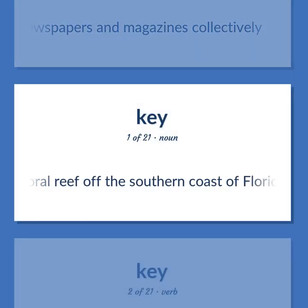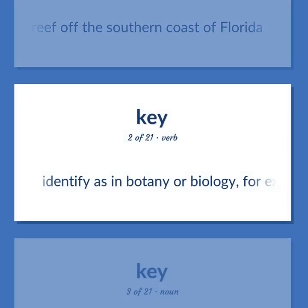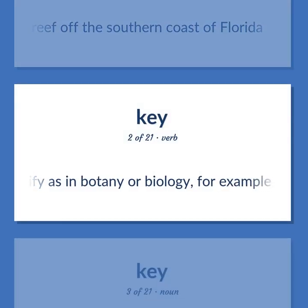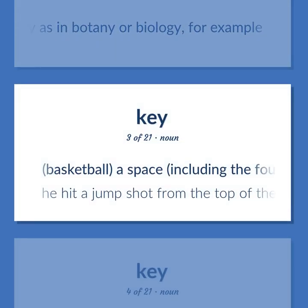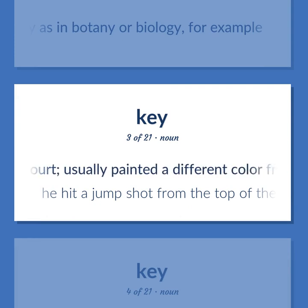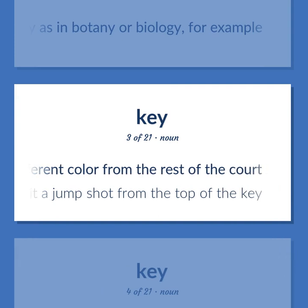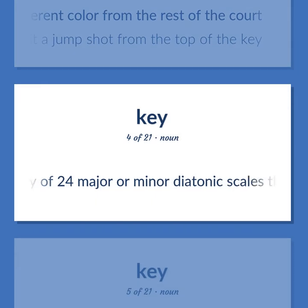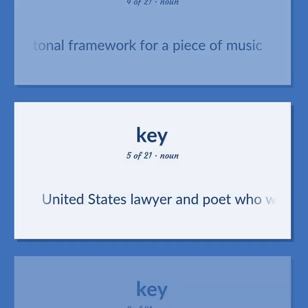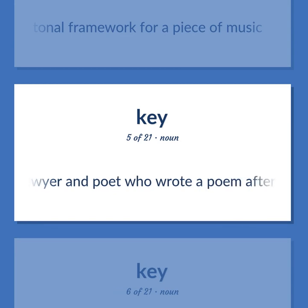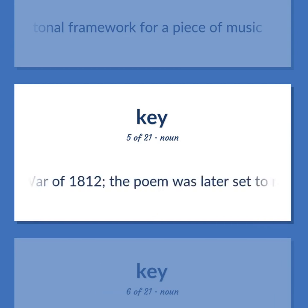KEY (noun – various meanings): A coral reef off the southern coast of Florida. Identify, as in botany or biology, for example. Basketball: a space, including the foul line, in front of the basket at each end of a basketball court, usually painted a different color from the rest of the court. Example: He hit a jump shot from the top of the key. Any of 24 major or minor diatonic scales that provide the tonal framework for a piece of music. Francis Scott Key: United States lawyer and poet who wrote a poem after witnessing the British attack on Baltimore during the War of 1812. The poem was later set to music and entitled The Star-Spangled Banner, 1779–1843.